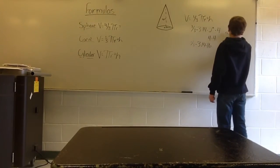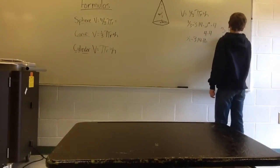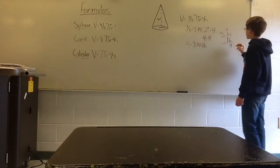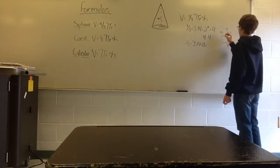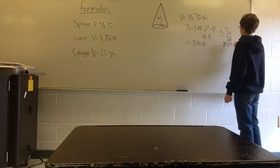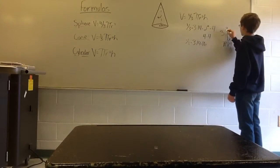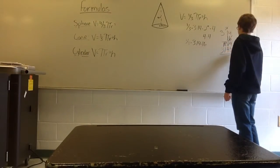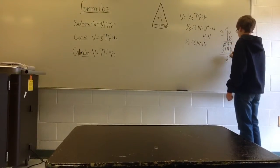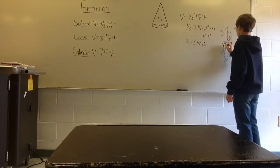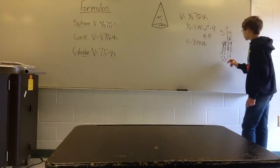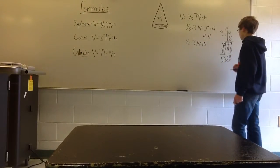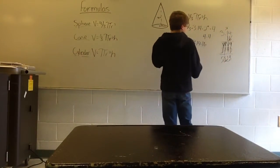Now we multiply 3.14 by 16. 6 times 4 gives you 24, bring your 2, 6 times 1 gives you 6 plus 2 gives you 8, and 6 times 3 gives you 18. Bring your 0 down; 1 times 4 gives you 4, 1 times 1 gives you 1, and 1 times 3 gives you 3. Add them all up — that gives you 5024. Count your decimal places and bring it over 2 places. Your answer is 50.24.